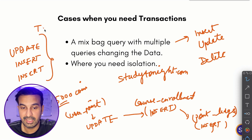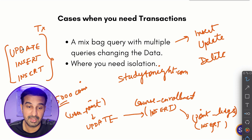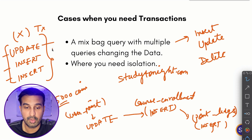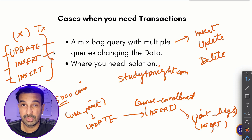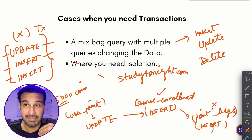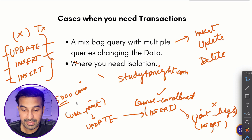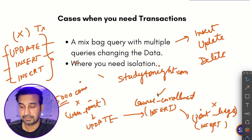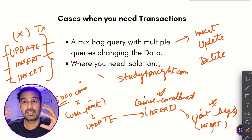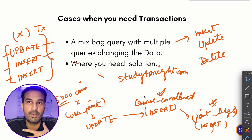For such cases we should definitely use database transactions, because if even a single operation fails, we should fail the entire process. We can't allow a situation where 5000 points are deducted and the user is enrolled but the point ledger entry fails — that would leave inconsistent data. Or worse, the point deduction fails but the user gets enrolled anyway without spending any coins.